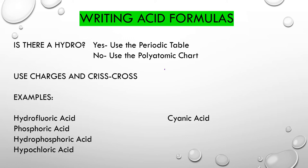Let's look at hydrofluoric acid. Hydro tells us periodic table. We know our cation for an acid is always H, and H just has a one plus charge. Since we're using the periodic table, it's fluorine that we're looking for as our anion. Fluorine has a one minus charge. So we know the formula for hydrofluoric acid is HF.